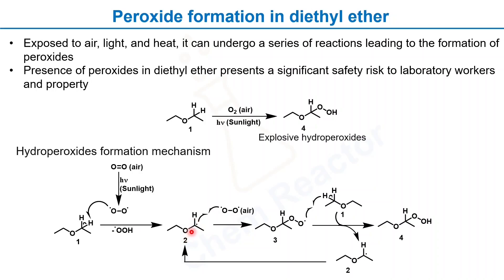This diethyl ether radical reacts with another oxygen radical to form diethyl hydroperoxide. This diethyl ether hydroperoxide radical again abstracts the hydrogen radical from another diethyl ether molecule to form diethyl ether hydroperoxide.